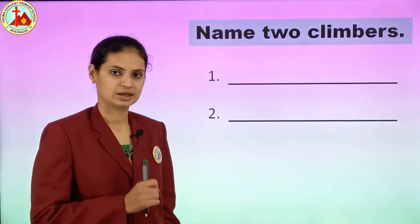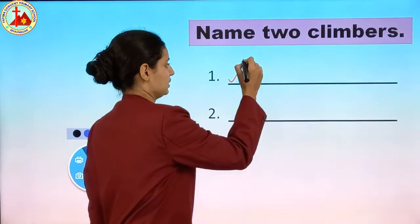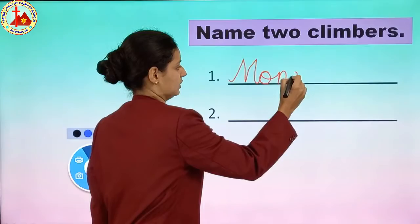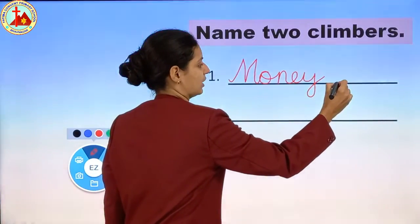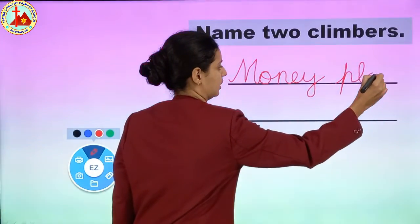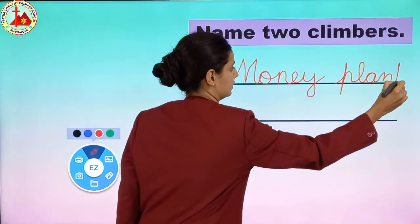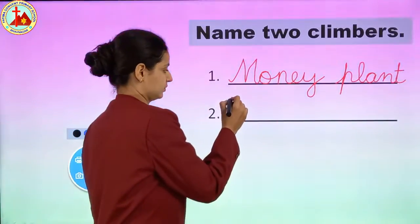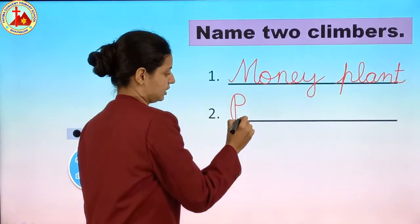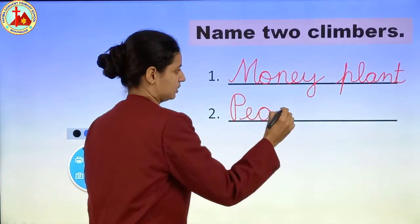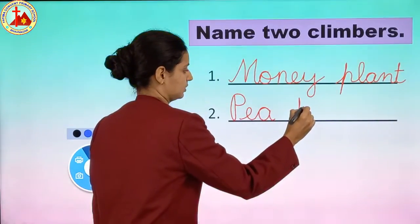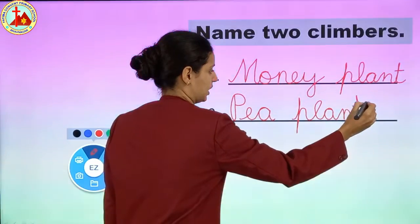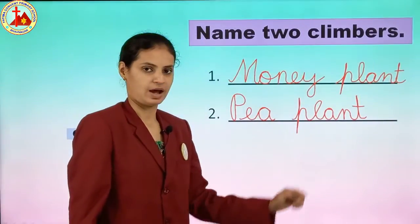In the first blank I will write money plant. First letter should be cursive capital M, O, N, E, Y. Money. P, L, A, N, T. Plant. Money plant. Next name I will write pea plant. Money plant and pea plant are climbers.